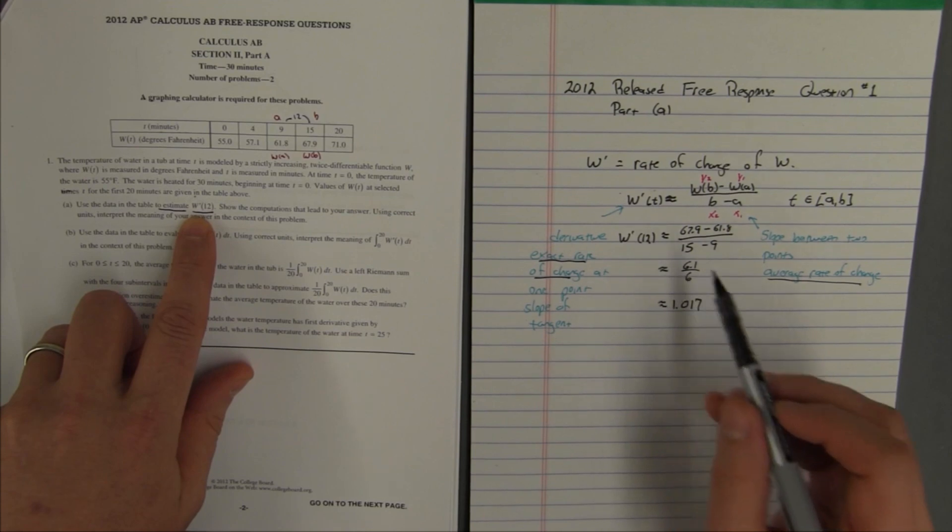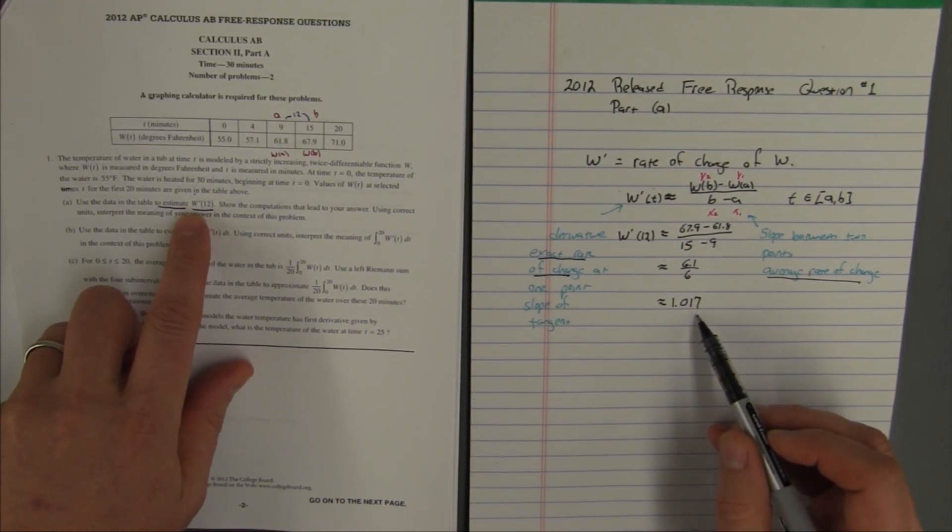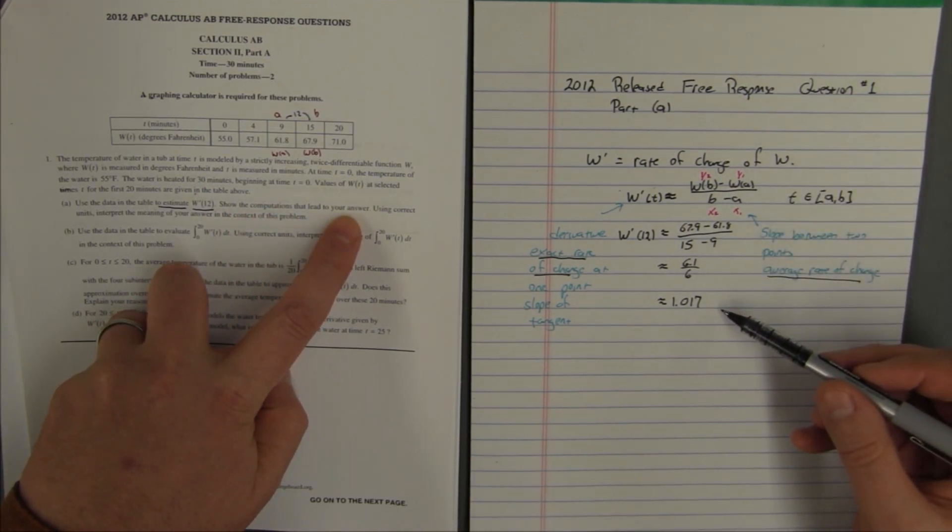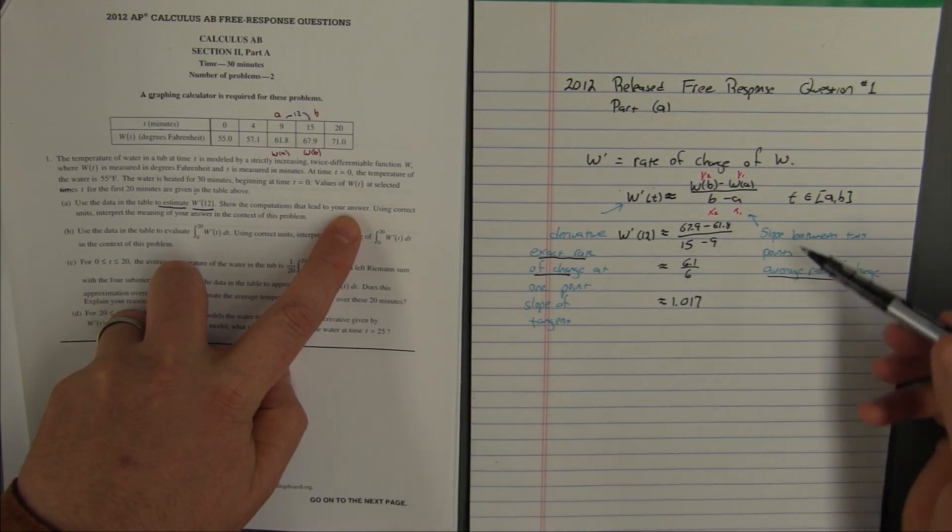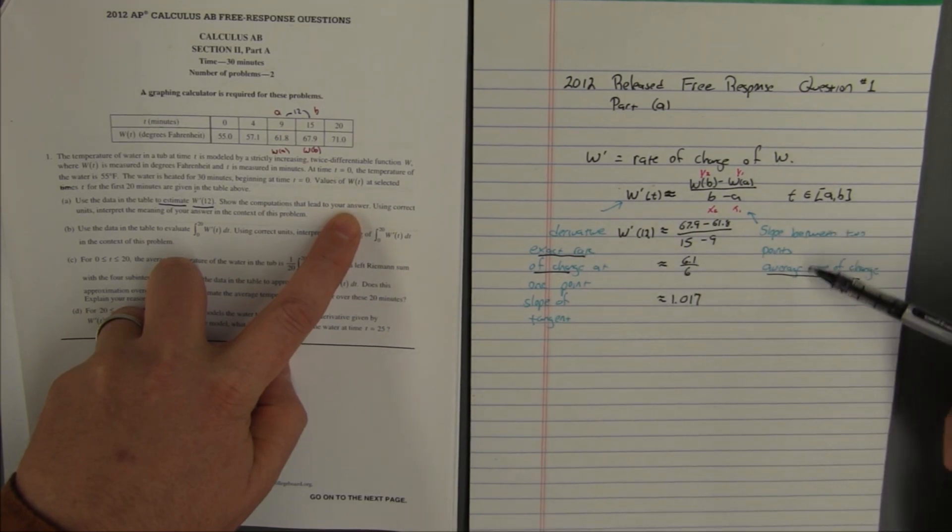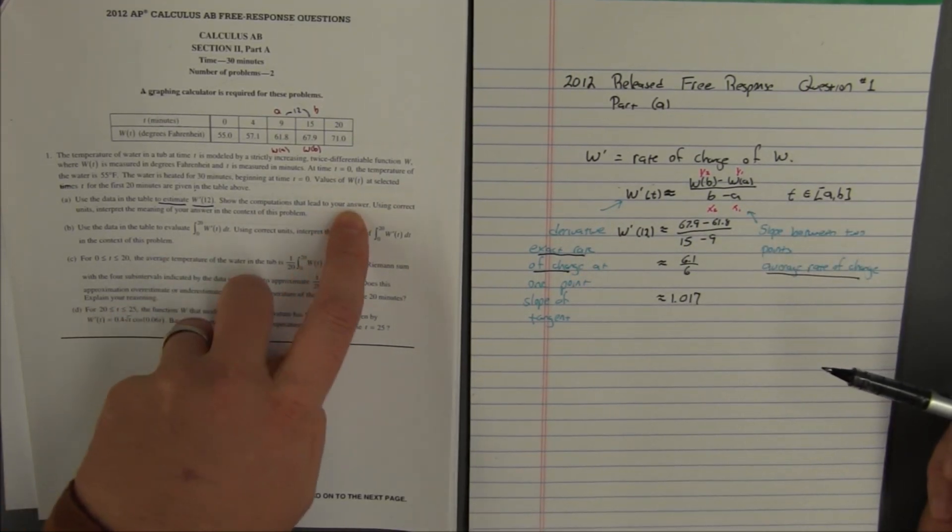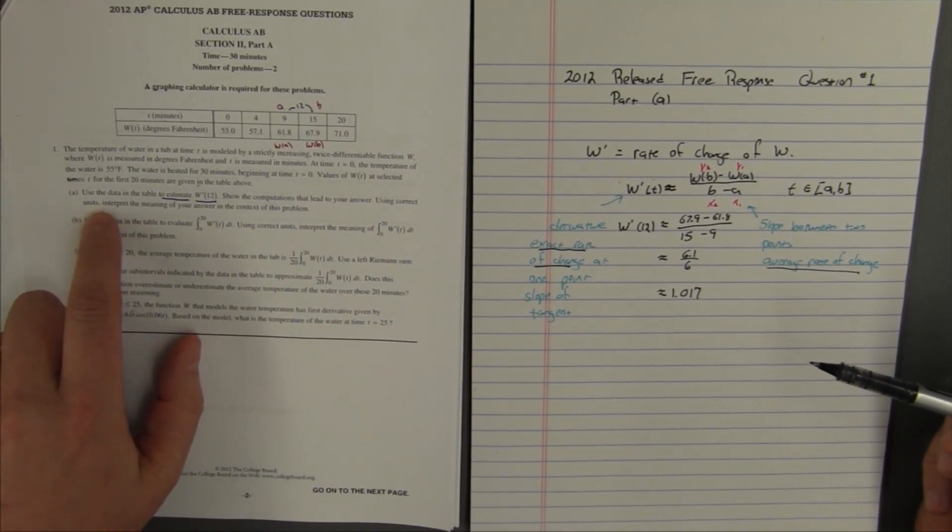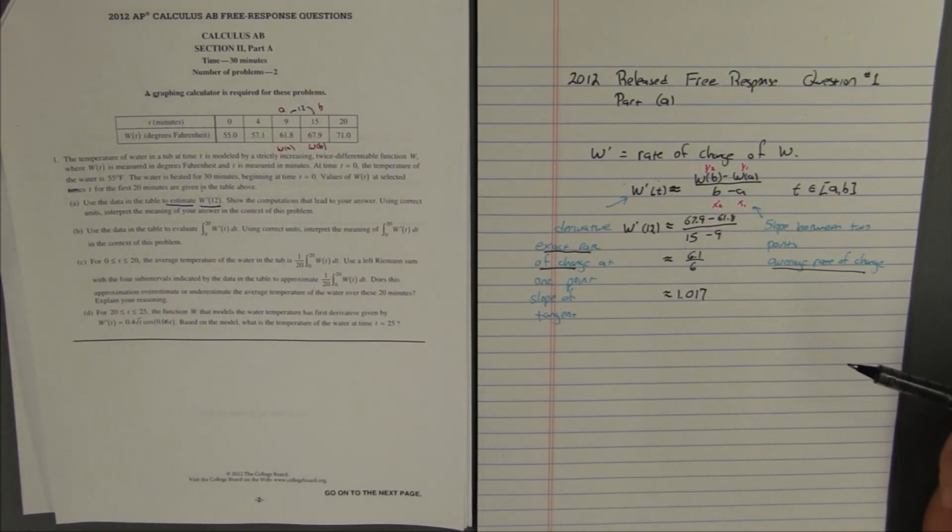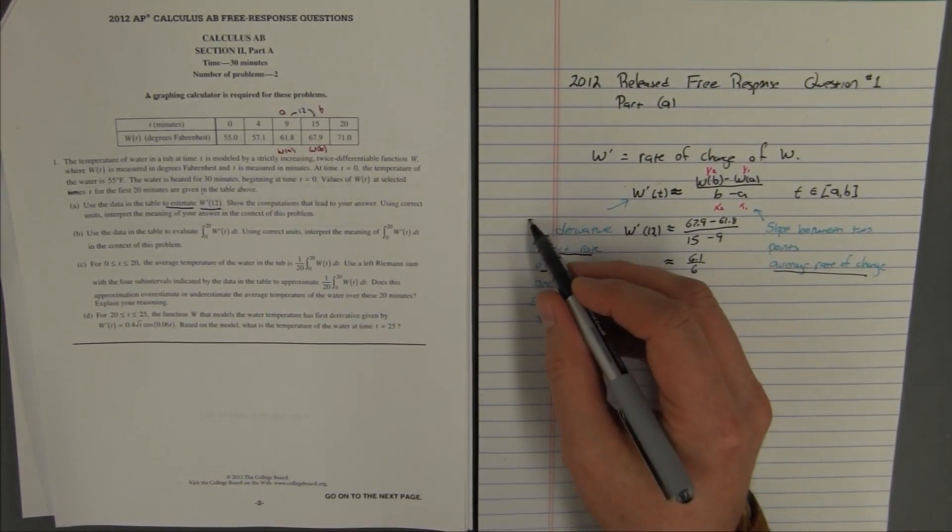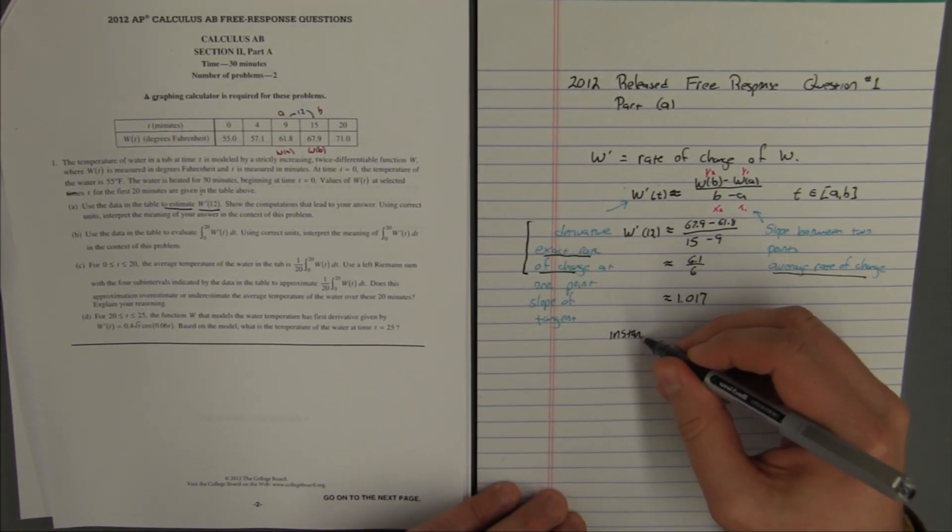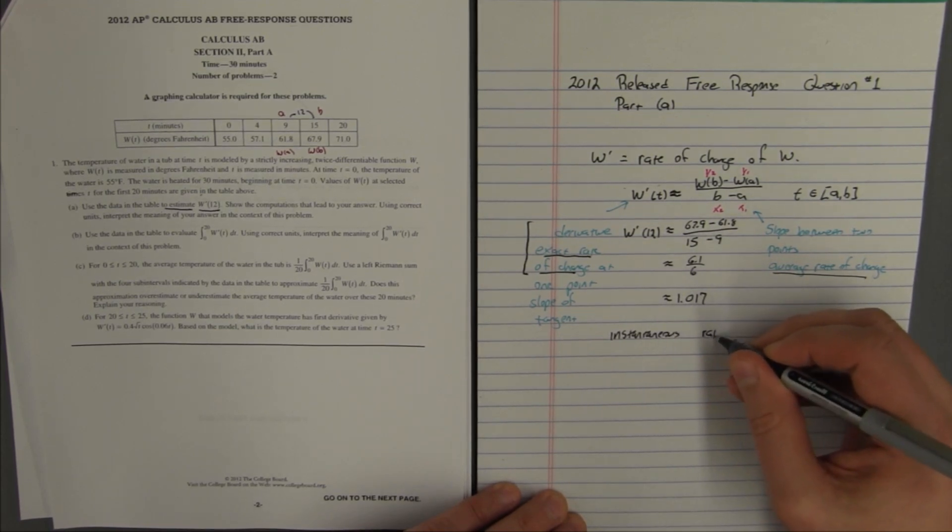I've used the data in the table to estimate w prime of 12, because it says here w prime of 12 is approximately equal to 1.017. So I've done that, I have shown the computations that lead to your answer, here are the computations that lead to my answer. I wrote these things out for my benefit today, but on the AP exam, you do not need to write explanation like this. You just need to show that work. Now we need to do this. Using correct units, interpret the meaning of your answer in the context of this problem. So now is where I need to understand that the derivative is an instantaneous rate of change.